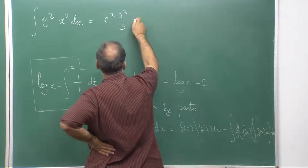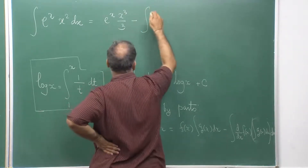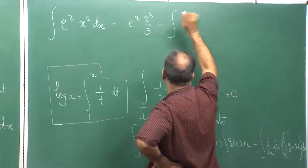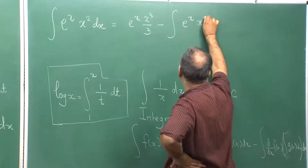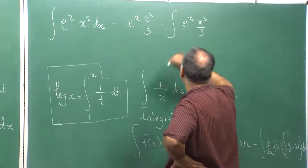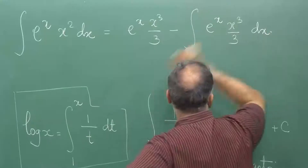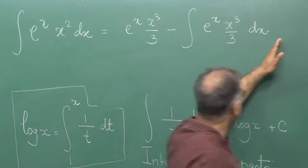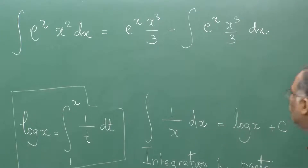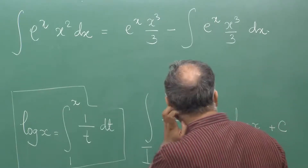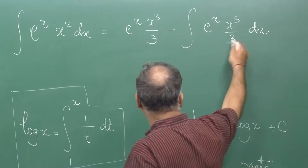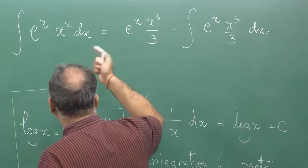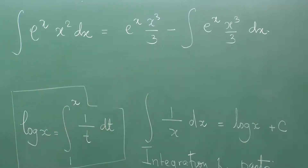Keep the first function e^x and integrate x² to get x³/3 — do not put the constant, as it will be part of the final answer. Then minus the integral of the derivative of e^x, which is again e^x, times x³/3 dx. You might think: I am stuck with a similar situation, and the power is increasing. When powers are increasing and things are getting out of control, try switching the roles of f and g.